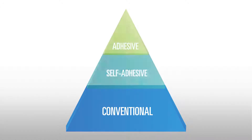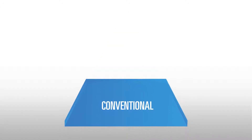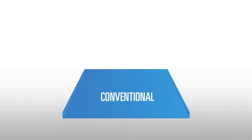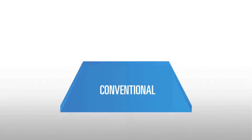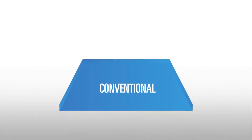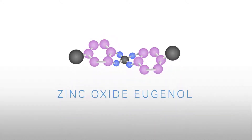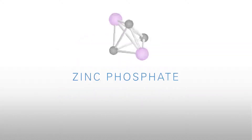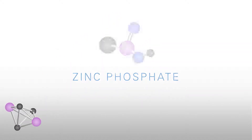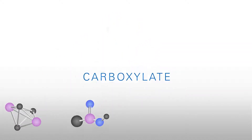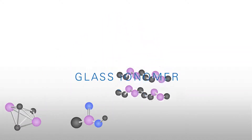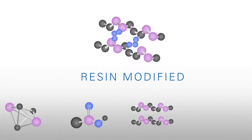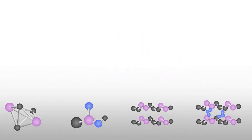Conventional cements are at the bottom of the pyramid and have been available since the 18th century with the introduction of zinc oxide eugenol. From there they've evolved into other cements such as zinc phosphate, carboxylate, glass ionomers, and resin modified glass ionomers.